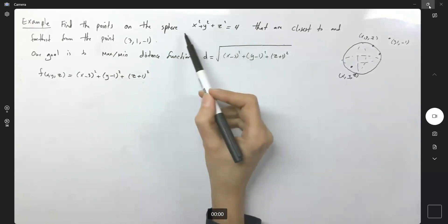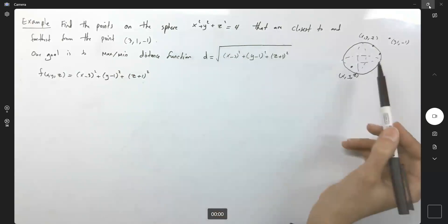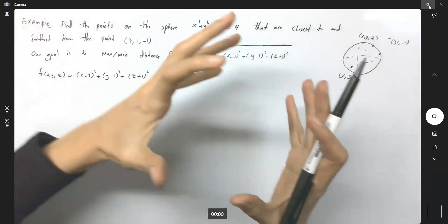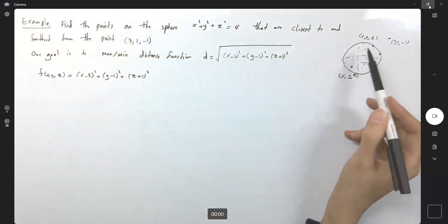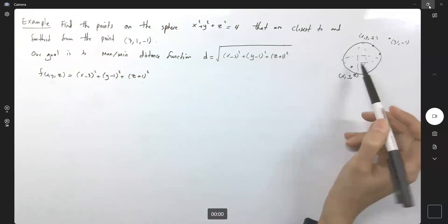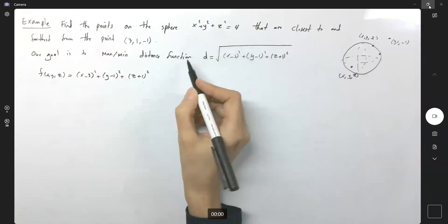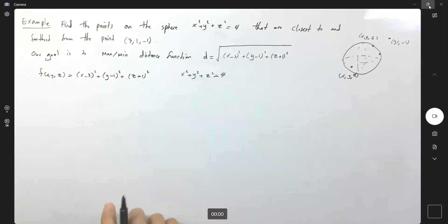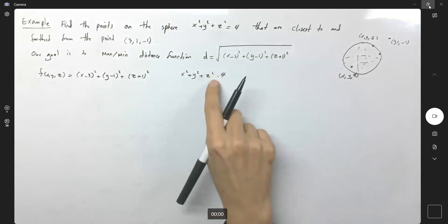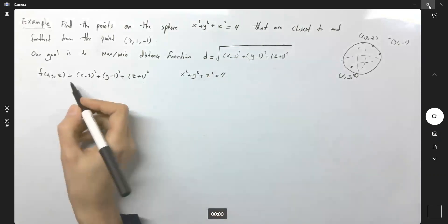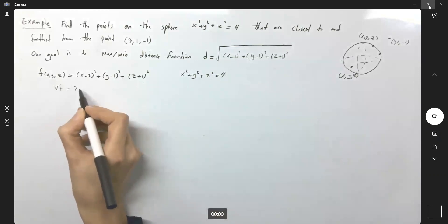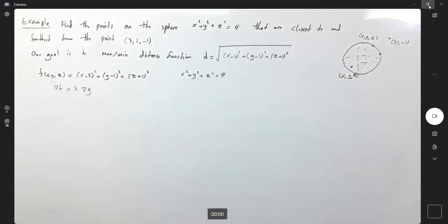The constraint is given. This sphere is fixed — it's not shrinking or expanding. So the constraint is x² + y² + z² = 4.